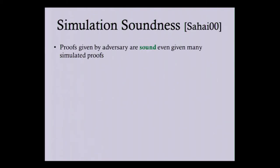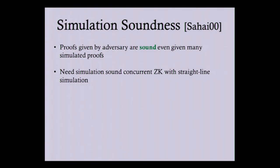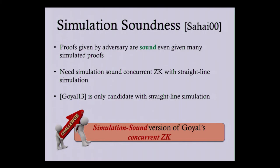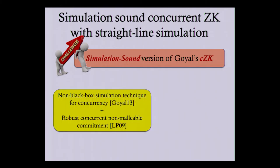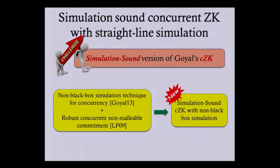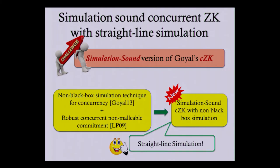Simulation-sound concurrent ZK says that the proofs given by the adversary remain sound even when it is given many different copies of simulated proofs by the simulator. In our work, we need a simulation-sound concurrent ZK with a straight-line simulation technique, and the only candidate known which works in a fully concurrent setting is Goyal's concurrent zero knowledge. The first challenge is to construct a simulation-sound version of Goyal's concurrent zero knowledge. We show that combining the non-black-box technique of Goyal with robust concurrent non-malleable commitments gives a simulation-sound concurrent ZK with a straight-line non-black-box simulator.